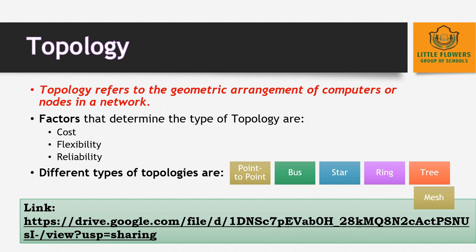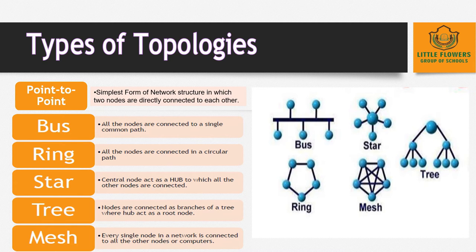Different types of topologies are: point-to-point, which is the simplest form of network structure in which two nodes are directly connected. This type of network is more suitable for small areas.